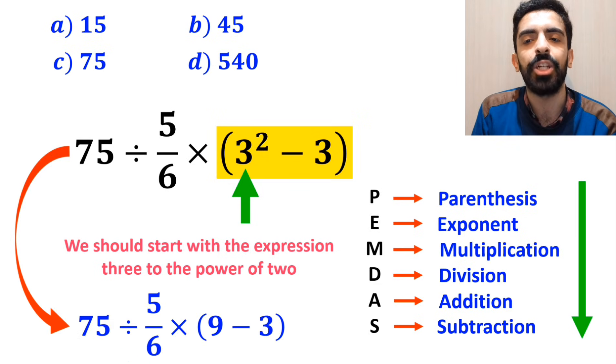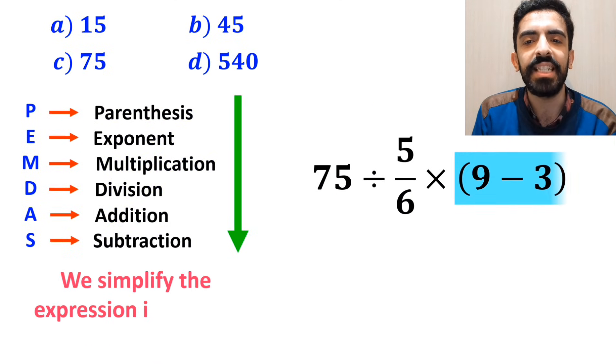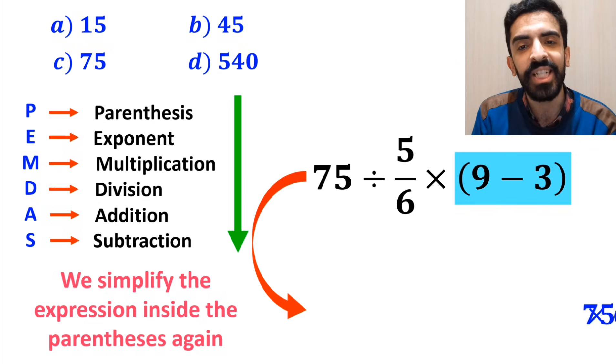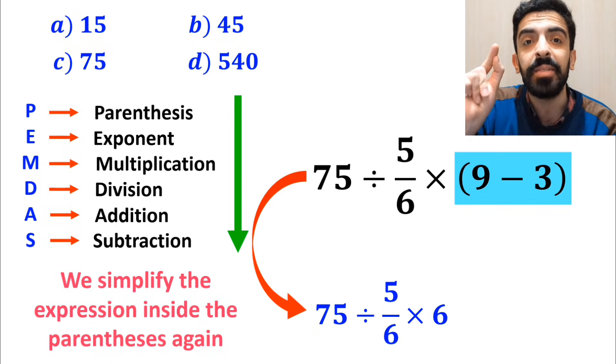So, instead of this expression, we can write 75 divided by 5 over 6 times 9 minus 3 inside the parentheses. In the next step, we simplify the expression inside the parentheses again, and instead of this expression, we can write 75 divided by 5 over 6 times 6.